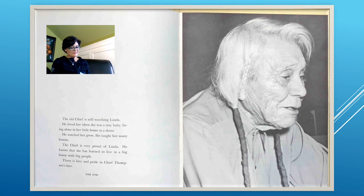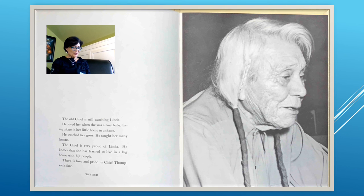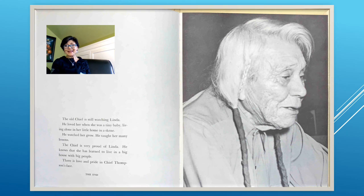Linda is sitting on her own blanket, playing with her own string of beads. She is a happy little girl because she is learning to mind. The chief's wife is teaching her that it is wrong to take people's time when they have work to do. The old chief is still watching Linda. He loved her when she was a tiny baby living alone in her little home in a skein. He watched her grow and taught her many lessons. There is love and pride in Chief Thompson's face. The end.